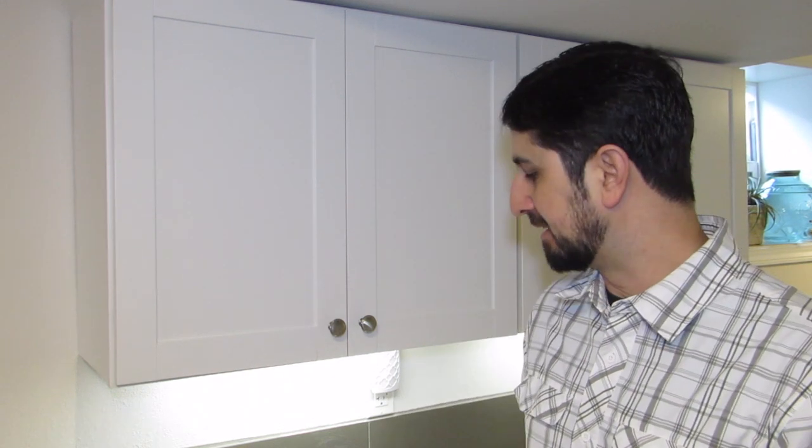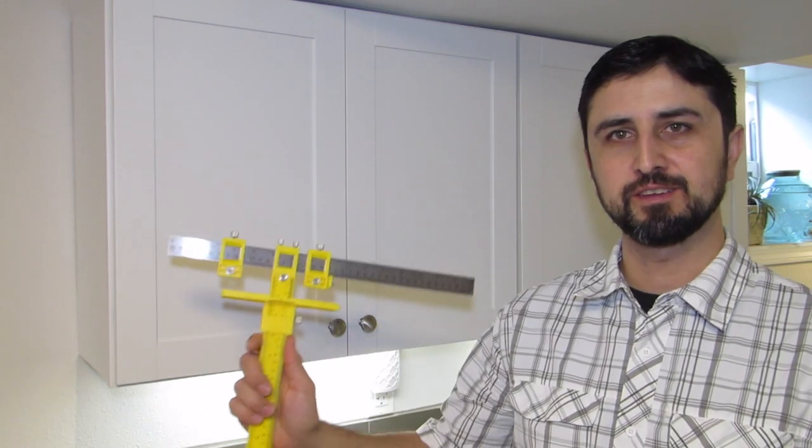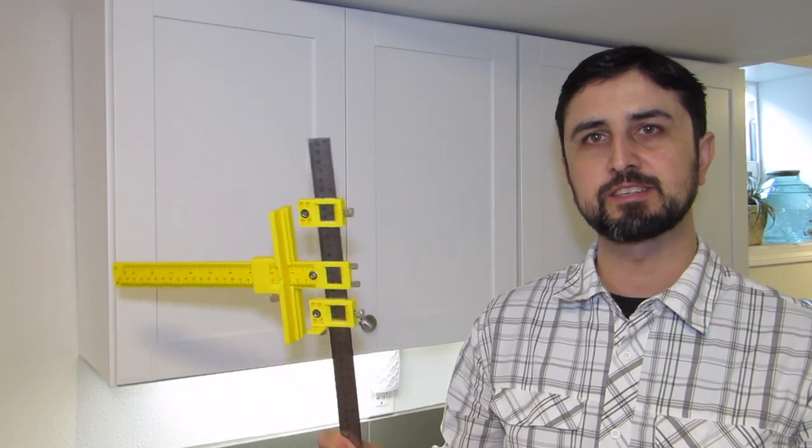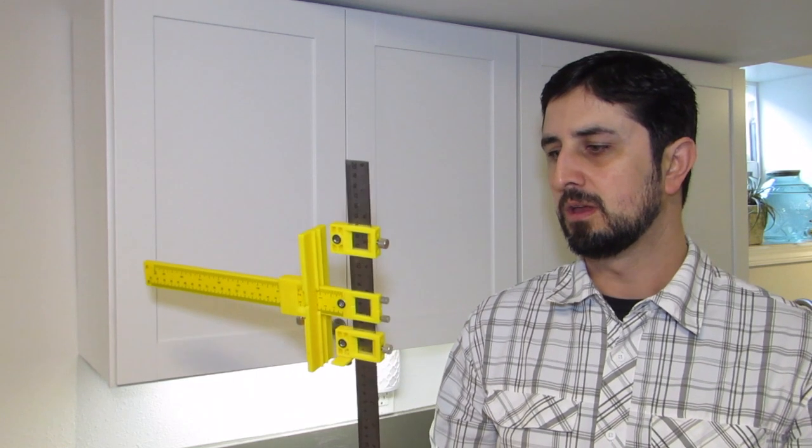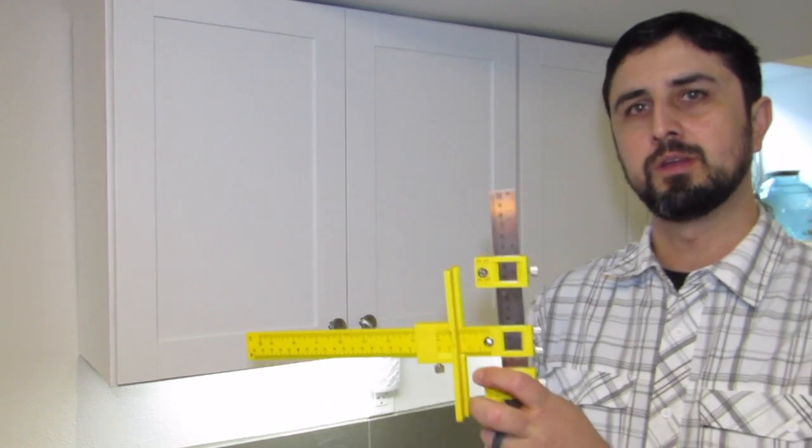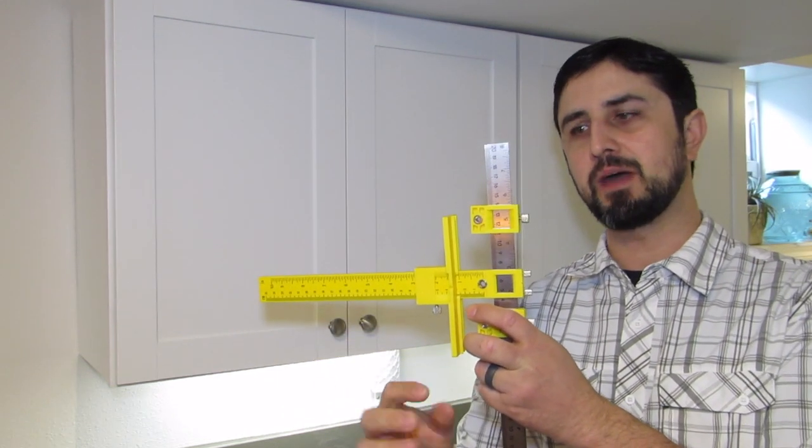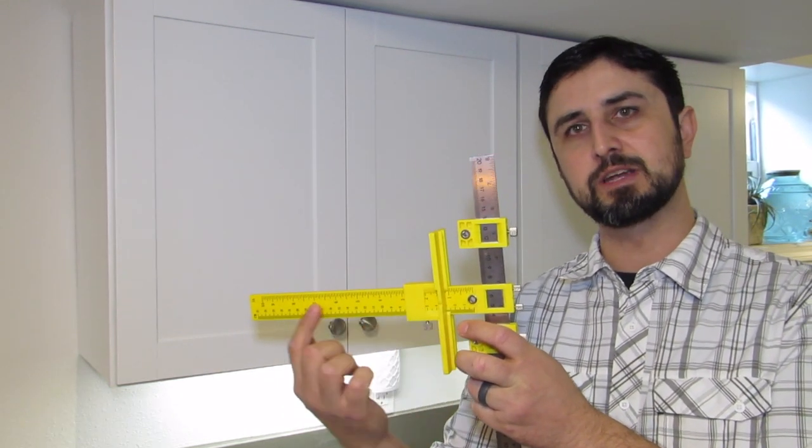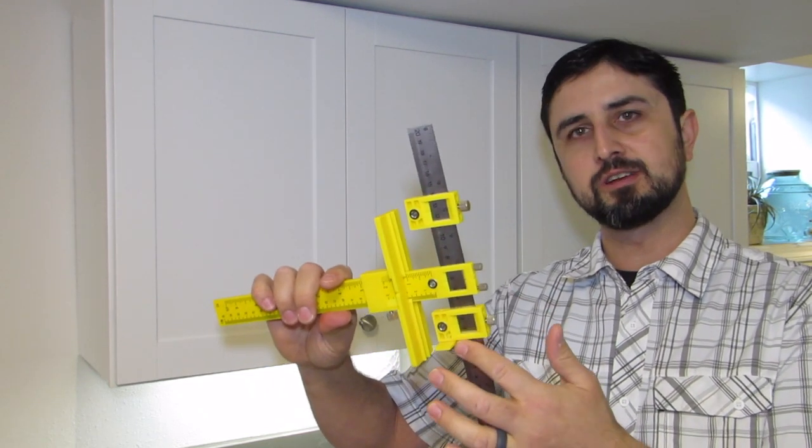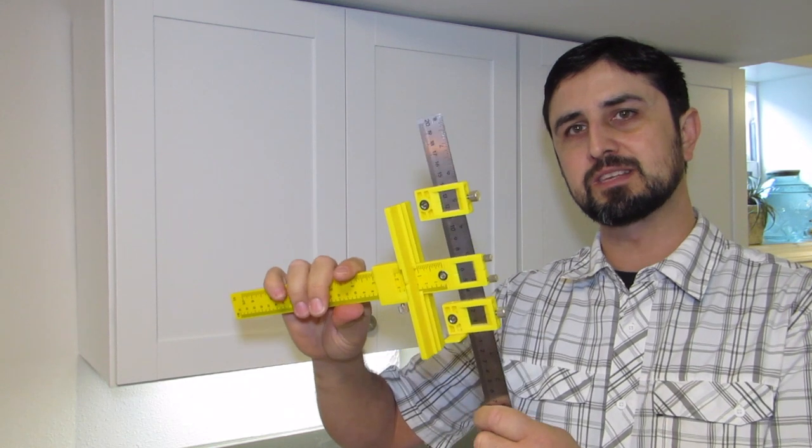And there they are. Hey folks, and there we have the cabinet handle installation process using this cabinet hardware jig by Sugar Larry. This was an interesting product to use. It took a little thought to figure it out but it really wasn't that hard, it was really simple. Some of the things that I really like about it is that it has these measurements on both directions. I like that you can center it to line it up with the base of the cabinet.